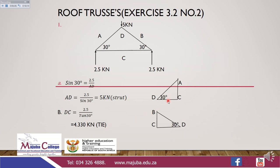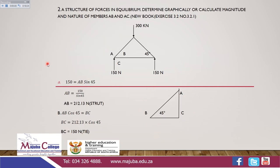Whatever we've done here will be equal on the other side because AD equals BD and DC equals CD — the two triangles are identical. Let's continue with another workout from the new book by R.P. Malby, exercise 3.2, number 3.2.1.